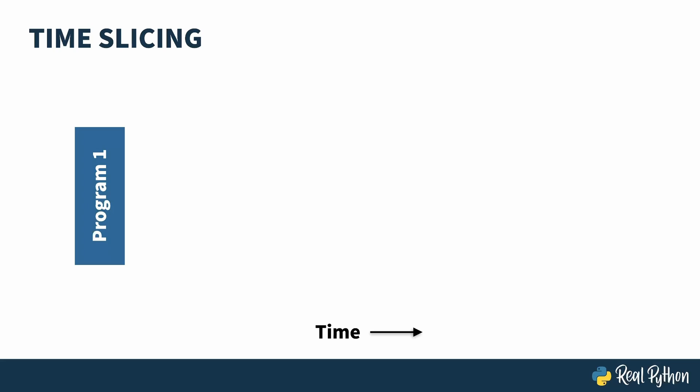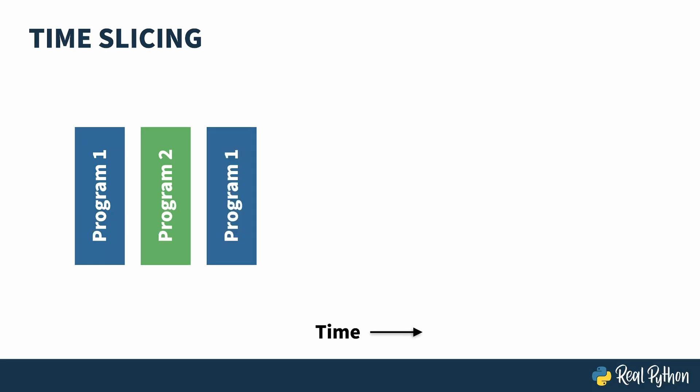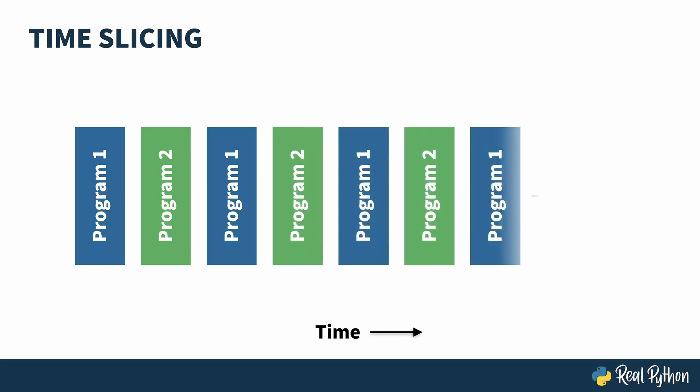How those early machines worked was to time-slice access to the processor. Program 1 might have control for a little while, and then the OS decides it's time for Program 2 — it suspends Program 1 and lets Program 2 do its thing, and then later switches back to Program 1. This process goes on for the duration of each of those programs. This diagram is a vast oversimplification; most operating systems have dozens of programs running in the background that are treated the same way, swapping them and the user's code in and out.